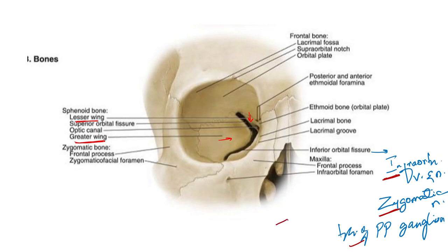We can remember the contents of the inferior orbital fissure as ZIP: Z stands for the zygomatic nerve, I stands for the infraorbital vessels and nerves, and P stands for the branches of the pterygopalatine ganglion.